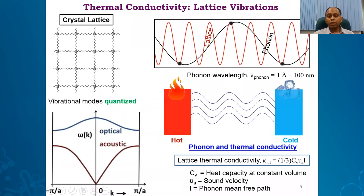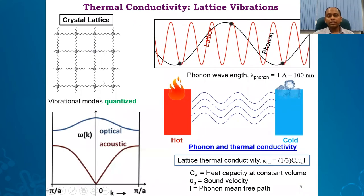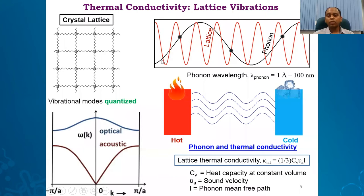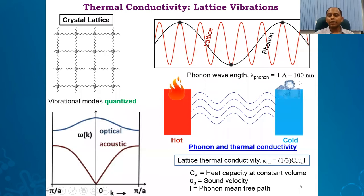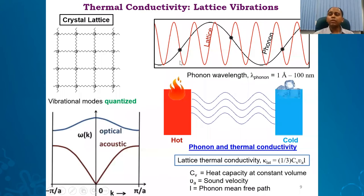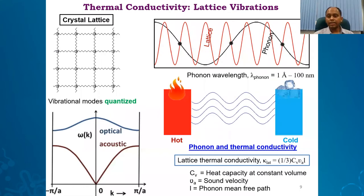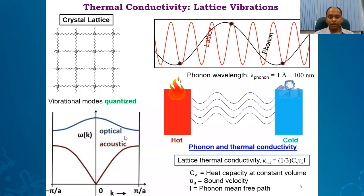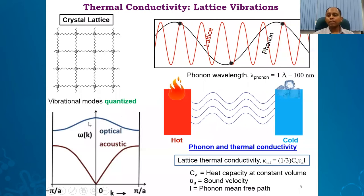Today I am going to talk about low thermal conductivity, and mostly lattice thermal conductivity. In a typical crystal, when the lattice vibrates it forms phonons, and these phonons carry heat from one end to another. Phonons generally have wavelengths from 1 angstrom to 100 nanometers. If we want to decrease thermal conductivity, we have to block those phonons. The question is how to block them.